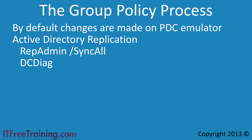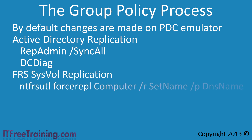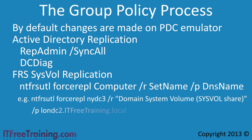The next part of Group Policy replication involves the files contained in the sysvol folder. If you are using FRS to replicate sysvol, you can use the ntfrsutil command. To force a replication, enter in the local computer name followed by /r and then the set name. The set name in this case will be Domain System Volume Sysvol Share. The last parameter is /p followed by the DNS name of the Domain Controller that you want to replicate with.